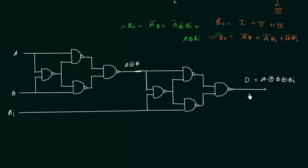The next part is the implementation of the borrow output, which is the most important part of this topic. However, we will not implement the borrow output in this presentation; we will implement it in the next lecture. In the next lecture, we will implement the borrow output of the full subtractor using NAND gates only.